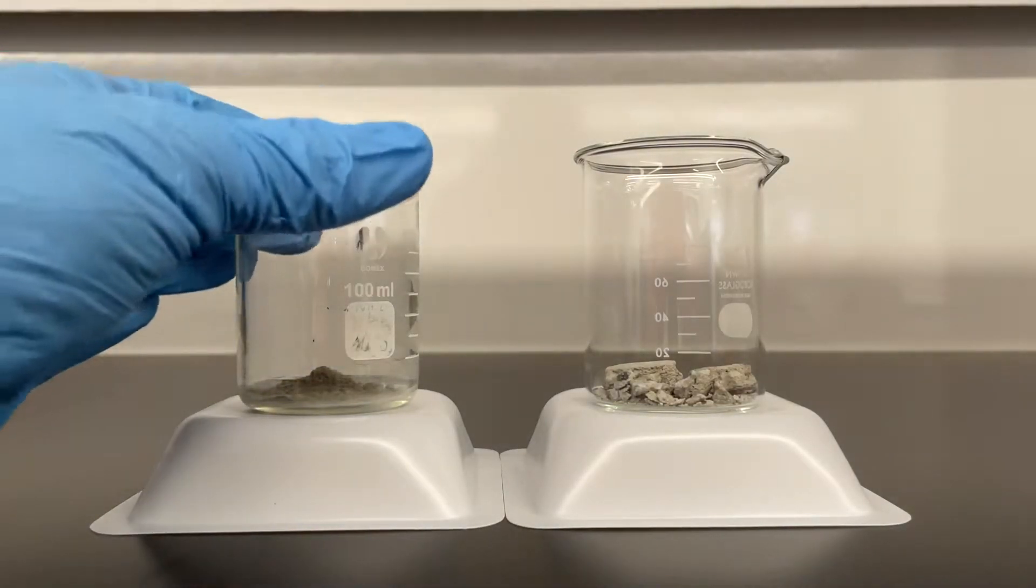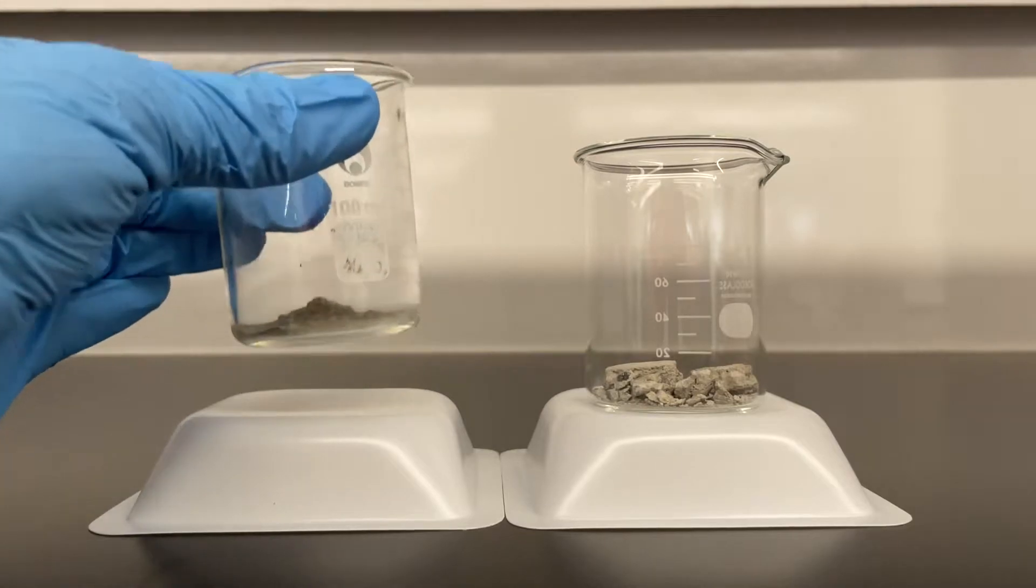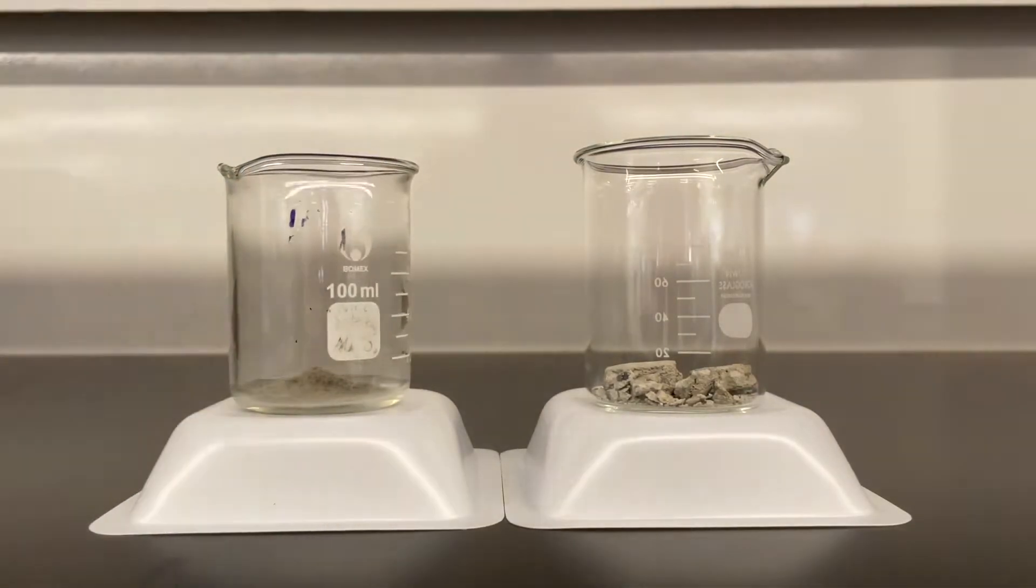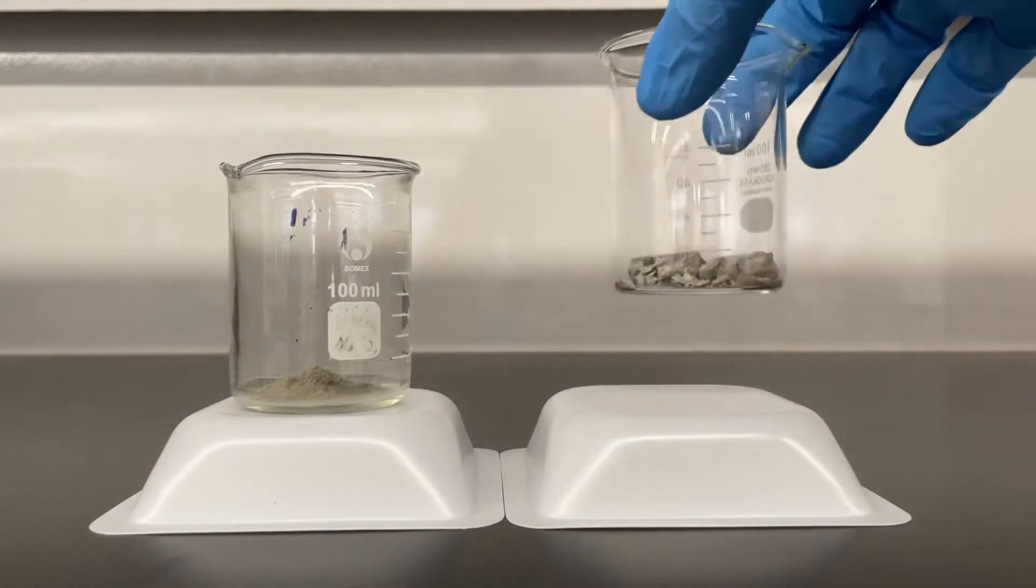What's the difference between fresh cement mix, which is on the left-hand side, and some old bits of concrete?